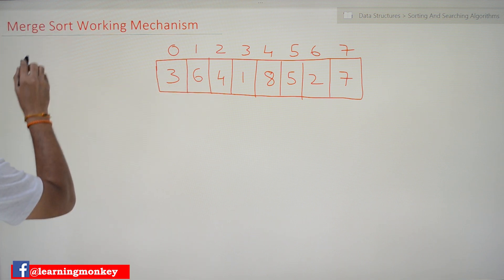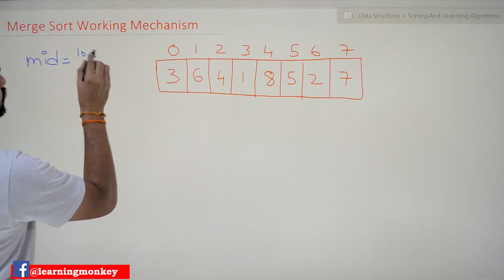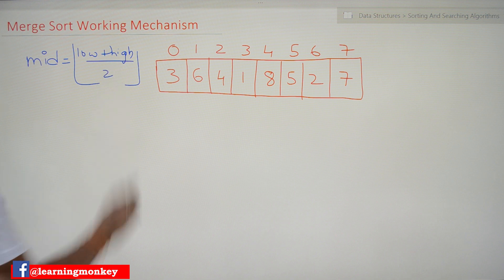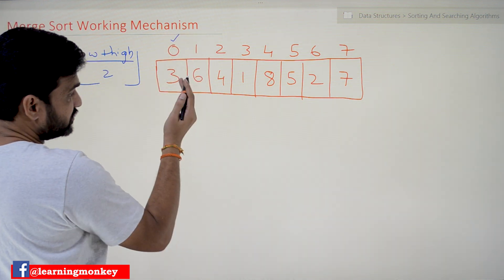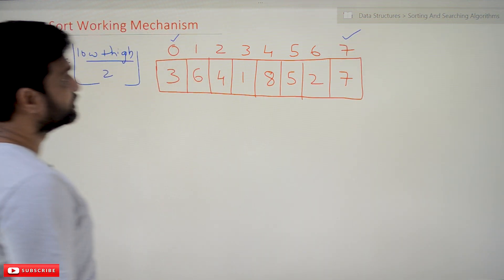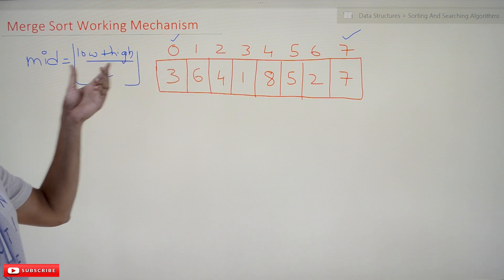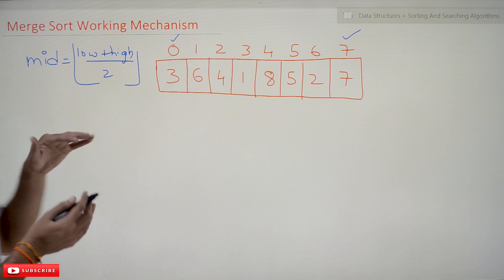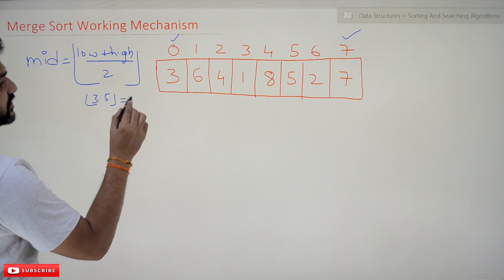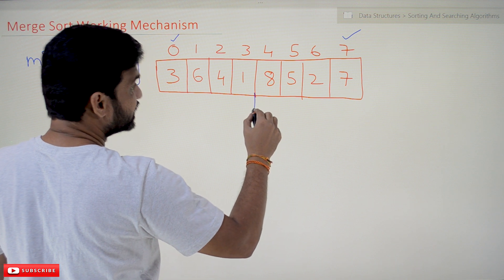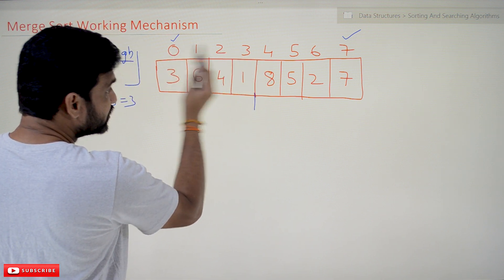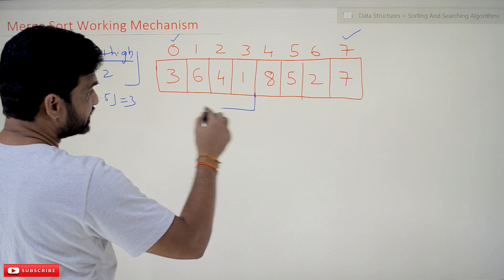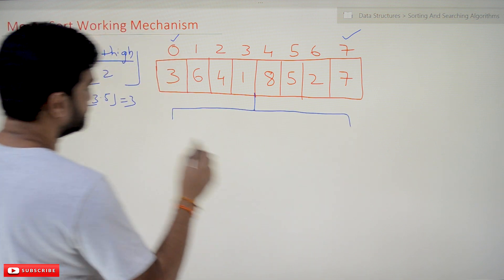The mid value is calculated as: mid = floor((low + high) / 2), where low is the smallest index and high is the highest index. For the first division: (0 + 7) / 2 = 3.5, and the floor value is 3. So the division happens at index 3 — all values up to index 3 form one sub-problem, and the remaining values form another sub-problem.